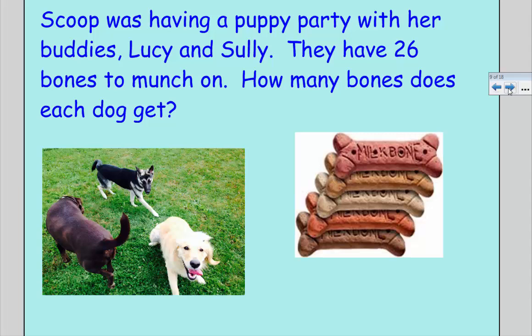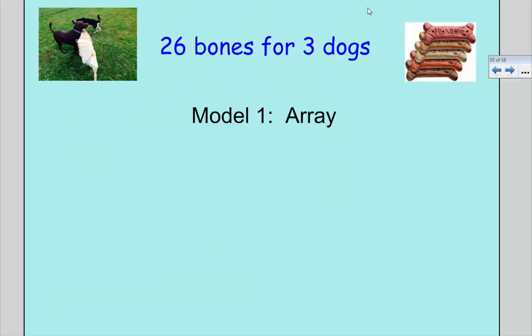We always want to be fair to make sure each dog gets the same amount of bones. We're going to look at three different strategies to figure out how many bones each dog can get. Really the key is to understand this is a division sentence. I have 26 bones and I want to divide them equally among three dogs.